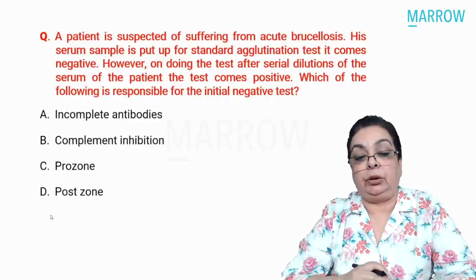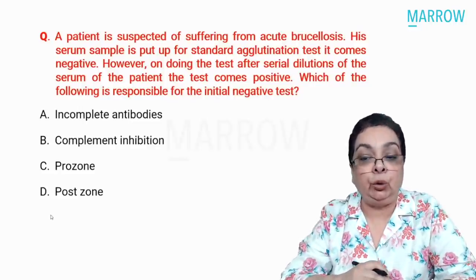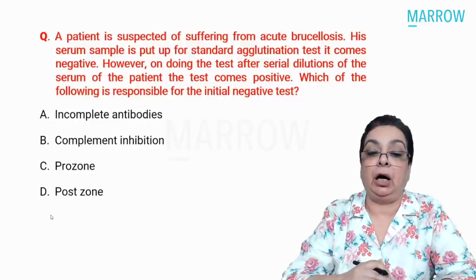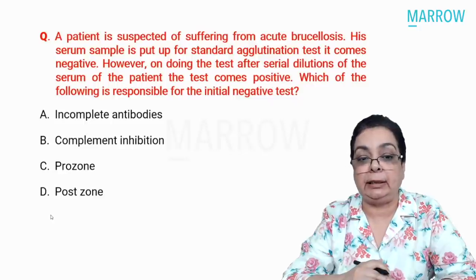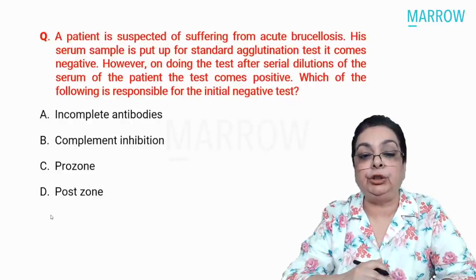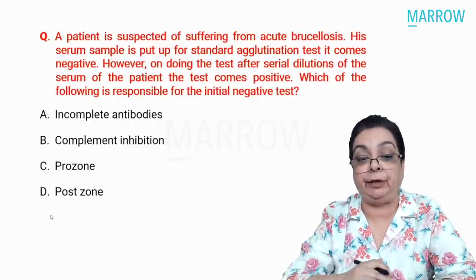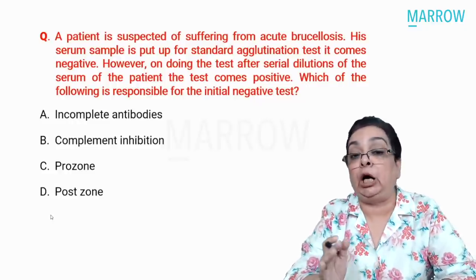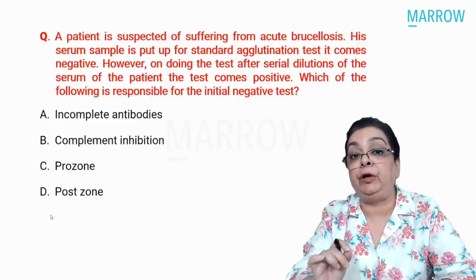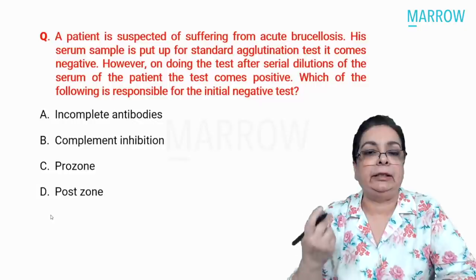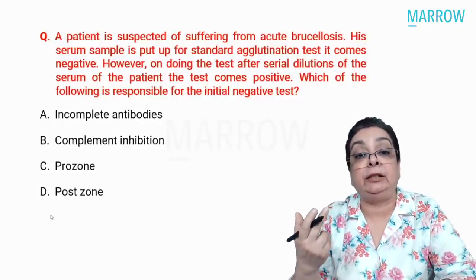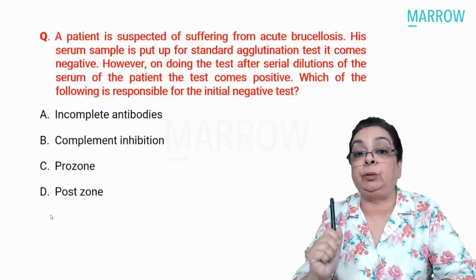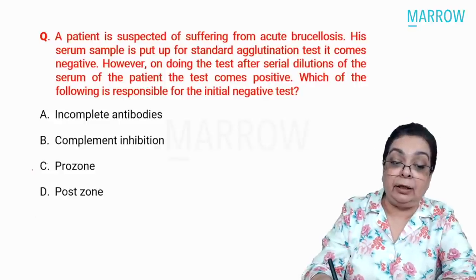Question 8: A patient suspected of acute brucellosis. His serum sample is set up for the standard agglutination test (SAT), which comes negative. However, after serial dilutions of the serum, the test becomes positive. Which is responsible for the initial negative test? The answer is prozone phenomenon. In acute brucellosis, the SAT detects IgM antibodies; it is a tube agglutination test and is typically associated with prozone phenomenon.